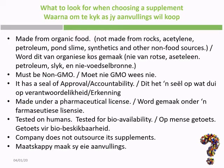If you want to choose a supplement, there are important criteria. Make sure it is made from organic food, not from rocks, acetylene, petroleum, or other synthetic non-food sources. Make sure it is non-GMO, because GMO foods often contain glyphosate and other toxins. Look for a third-party seal of approval confirming the supplement has been tested. It must also be made under a pharmaceutical license — this guarantees that what's on the label is actually in the product.